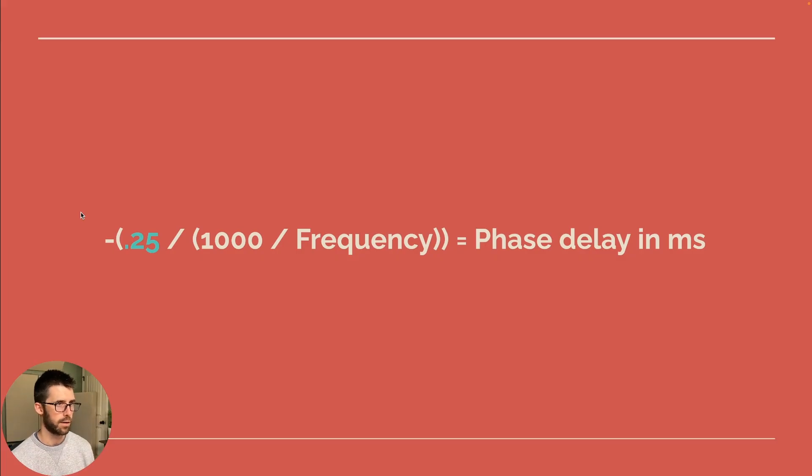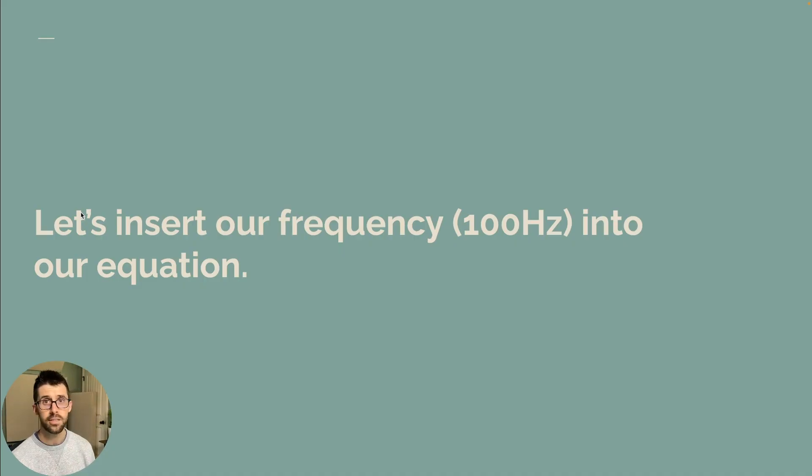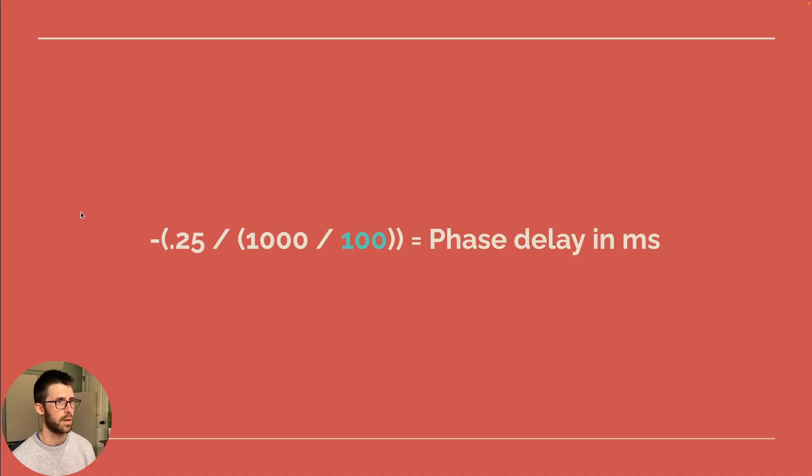Now that we have that there, let's continue to solve the equation. So we've plugged in 0.25. So now let's insert our frequency, 100 hertz, into our equation. So I've got negative 0.25 times 1000 divided by 100. So that's where frequency goes. So now let's continue to solve that. That is 1000 divided by 100.